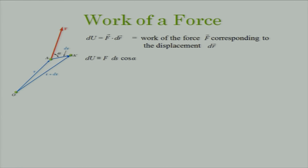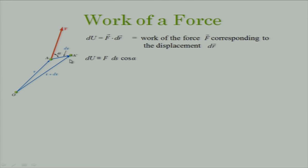We have discussed force until now — 3D equilibrium, trusses, friction, 2D equilibrium and so on. Now we are going into different territory. We spoke the language of force, and here we will speak the language of energy or work. If there is a particle A on which we apply force F, the work of force F corresponding to a small displacement dr is F·dr, or in scalar notation F·ds·cos α.